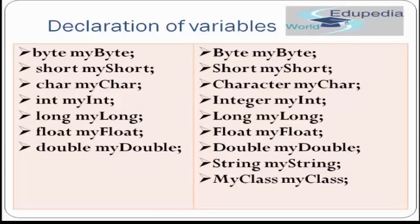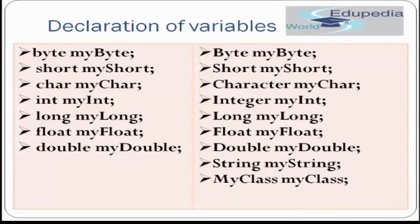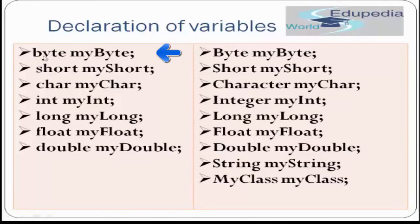To declare a primitive or object type, you need to either mention the data type or the class name, followed by the variable name or object name. To declare a primitive type, just mention the data type and variable name. For example, byte myByte — byte is the data type and myByte is the variable. Similarly we have variables for short, char, int, long, float, and double — these are primitive data types.